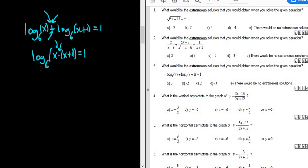Now to get rid of the log, we have to exponentiate. The base here is 6, so we'll put a 6 here and put a 6 here. And so all of this cancels, and you just get x(x + 1) equals 6 to the 1, so 6. That's a really important technique.